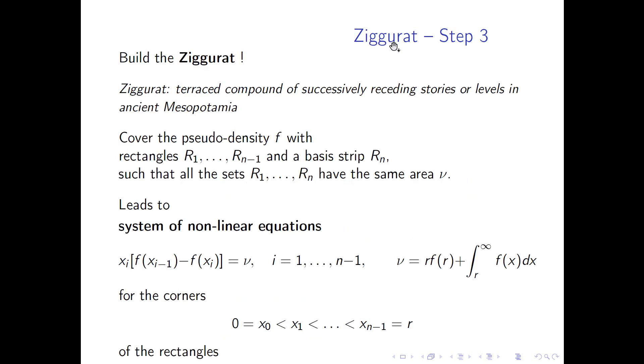Okay, so step number three. Step number three is to actually build a Ziggurat. What's a Ziggurat? So Marsaglia and Tsang didn't choose this name by coincidence. A Ziggurat is a terraced compound of successively receding stories or levels in ancient Mesopotamia. So it's one of the classical temple buildings. And building the Ziggurat in our context means, we cover the pseudo-densities f with rectangles R_1 up to R_(n-1) and the basis strip R_n, such in a way that all the sets R_1 up to R_n have the same area nu.